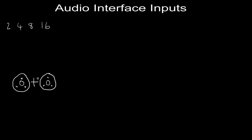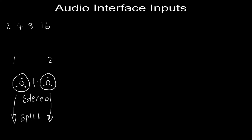They're always tied together as a stereo pair. That's their default operating mode — inputs always work together in pairs. So here we've got input one and two on a two-input device. Those two inputs, by default, are tied together in stereo. But at any time, they can be split in half so that each one operates independently in mono. That's how inputs on interfaces always work.